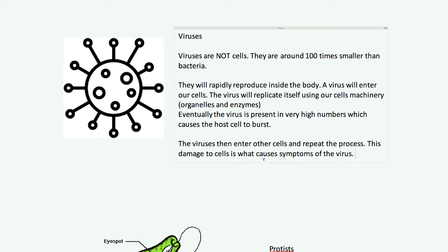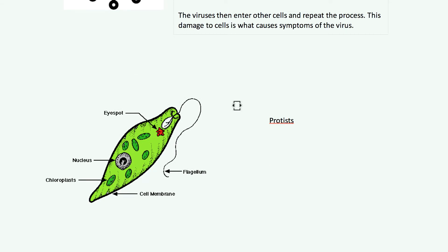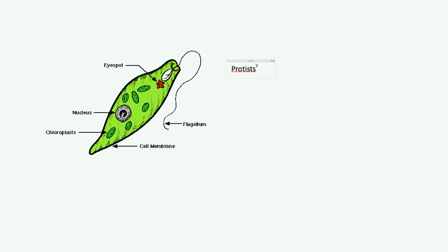Next we have something called a protist. Now there are lots of different types of protists. But there are a few common features that we need to know. So, a protist is a eukaryote. These are eukaryotic organisms. For example, plants and animals are eukaryotic organisms, as you should know, and protists are also eukaryotes, whereas bacteria are prokaryotes. However, most of them are single-celled organisms. So most of them are single-celled organisms but they are eukaryotes.